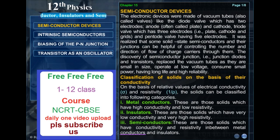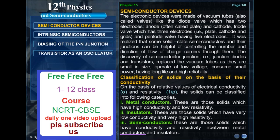It was realized that some solid state semiconductors and their junctions can be helpful in controlling the number and direction of flow of charge carriers through them. The discovery of semiconductor junctions, that is junction diodes and transistors, replaced the vacuum tubes as they are small in size, operate at low voltage, consume small power, having long life and high reliability.